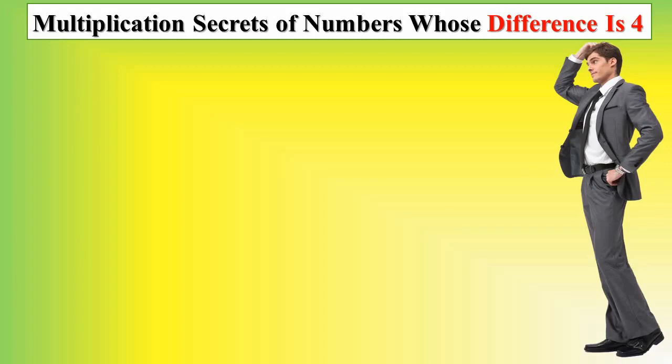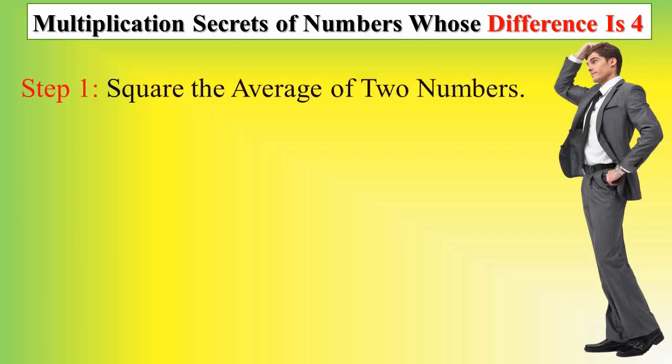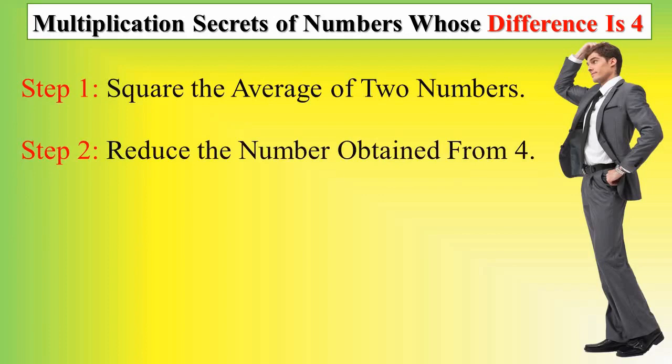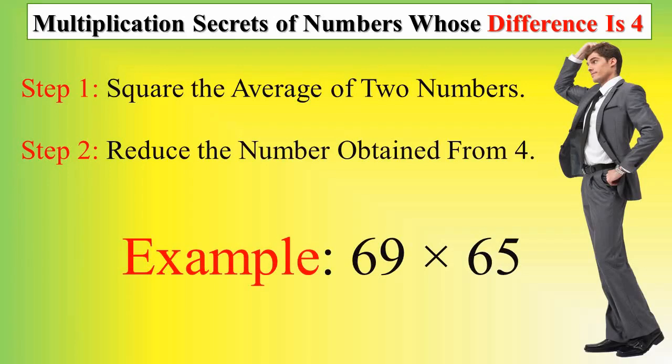Multiplication of numbers whose difference is 4. Step 1: Square the average of 2 numbers. Step 2: Reduce the number obtained from 4. Here in this example, we have 69 multiplied by 65. As you see, the difference is 4.